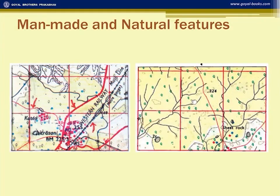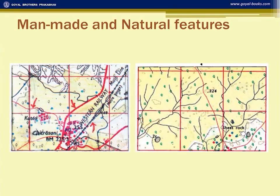Spot heights, trees, rivers, and dry tanks are all natural features. Sheet rock is also natural. However, a survey tree marked in black is a man-made feature because it is a surveyor's mark.